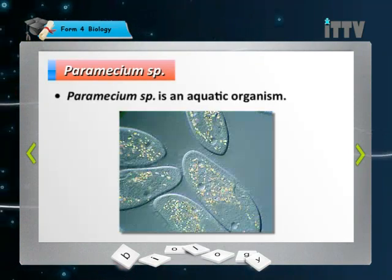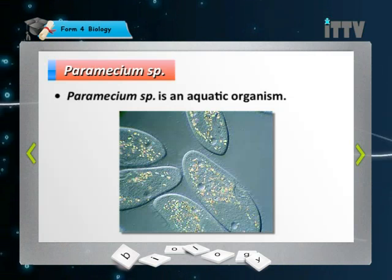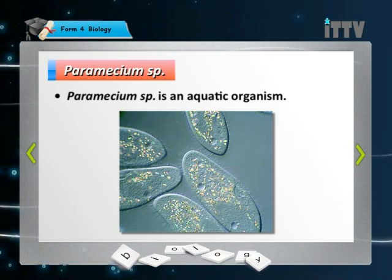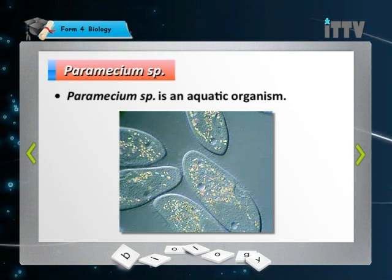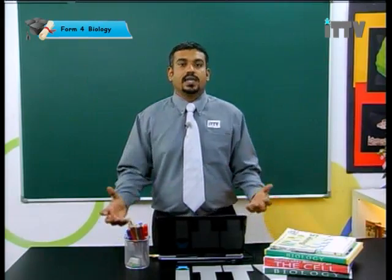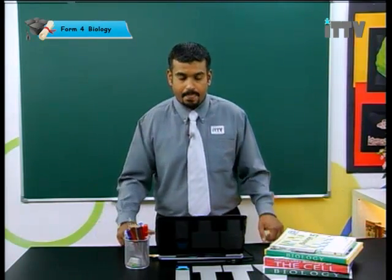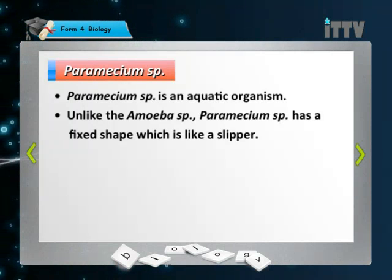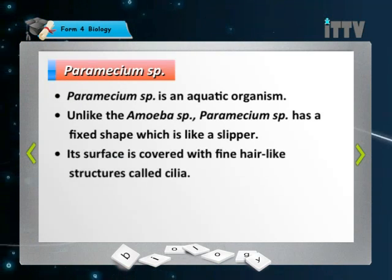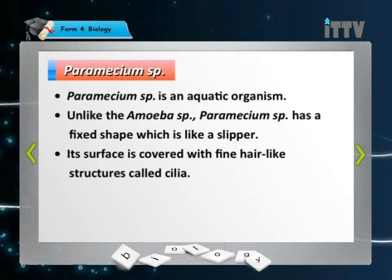Paramecium sp. — note that we underline the scientific name, following the correct method always. Paramecium is an aquatic organism. The word aquatic refers to a water environment — it can be a pond, river, lake or even the sea. Unlike the amoeba, Paramecium has a fixed shape which is like a slipper. Its surface is covered with fine hair-like structures called cilia.